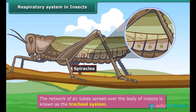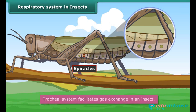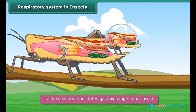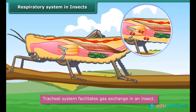The spiracles open into a network of thin air tubes spread over the body of an insect. These tubes are known as the trachea, and they facilitate gas exchange. Oxygen reaches the cells through the tracheal system, and carbon dioxide is received from the cells by the tracheal system and expelled from the insect body through the spiracles.